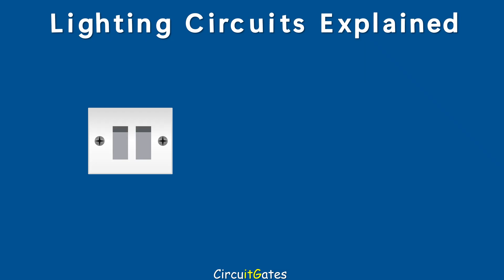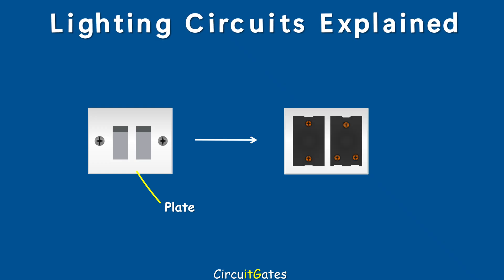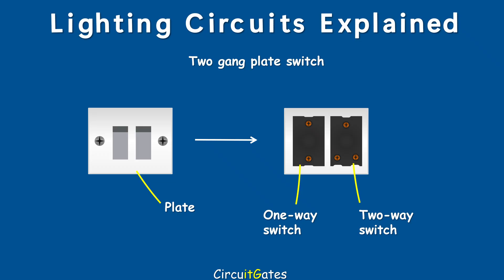In electrical switches, we often come across terms like single-pole switch, double-pole switch, one-gang switch, two-gang switch, and more. We have already looked at a one-way switch, two-way switch, and an intermediate switch. Switches found in domestic installations are contained within a plate. When a plate contains one or more separate switches — for example, a plate containing a one-way switch and a two-way switch — we call this a two-gang plate switch. The term gang refers to how many separate switches are on the plate.